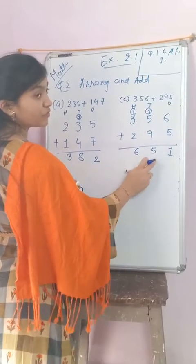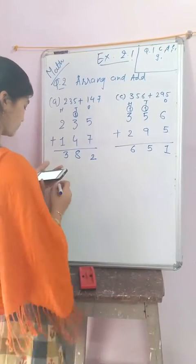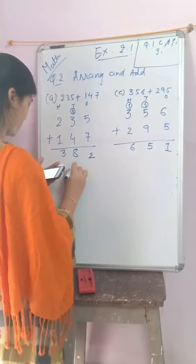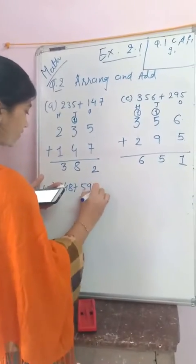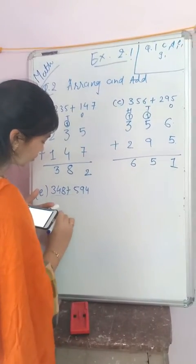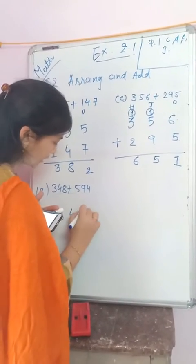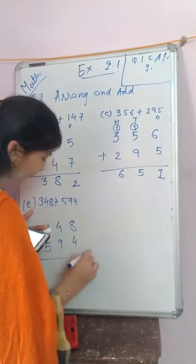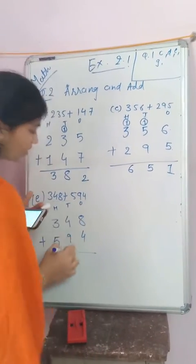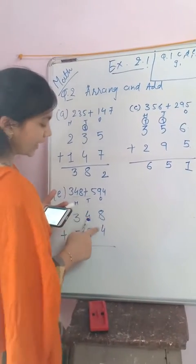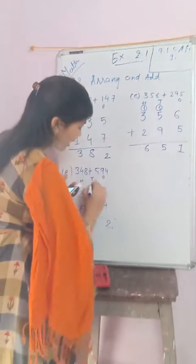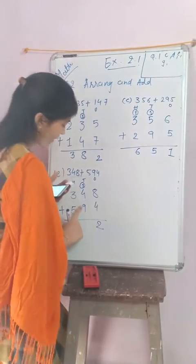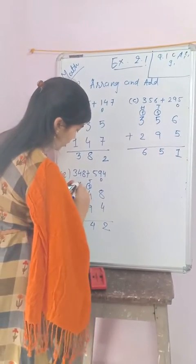Next, e: 348 plus 594. Arrange this number vertically — ones, tens, and hundreds. Starting from the ones place: 8 plus 4 equals 12, write 2 and carry 1. Then 4 plus 1 carry equals 5, 5 plus 9 equals 14, write 4 and carry 1.